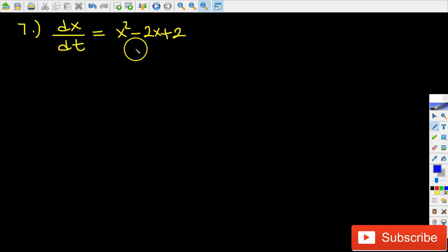In this case, I would like to get x squared minus 2x plus 2 together with dx. So what I'm going to do is divide each side by x squared minus 2x plus 2.